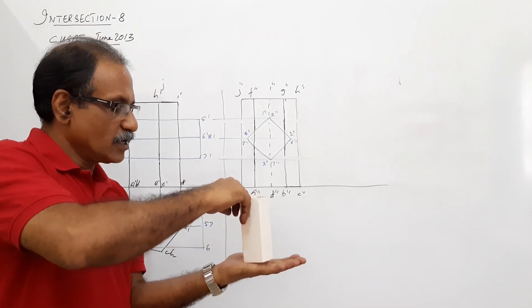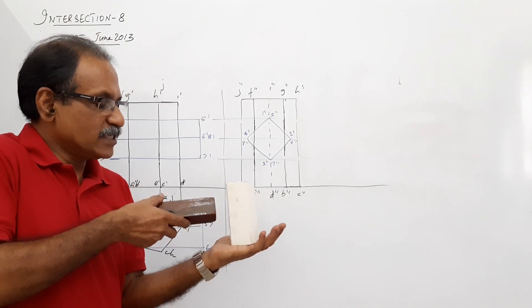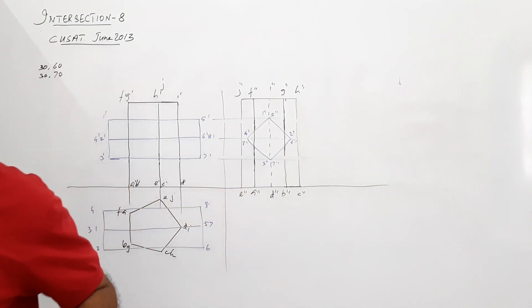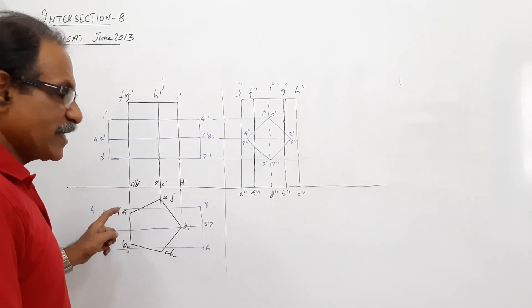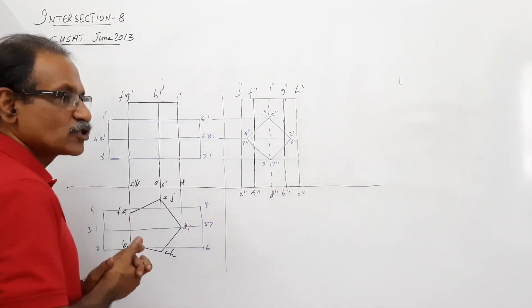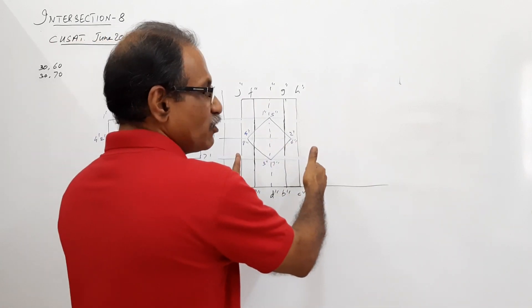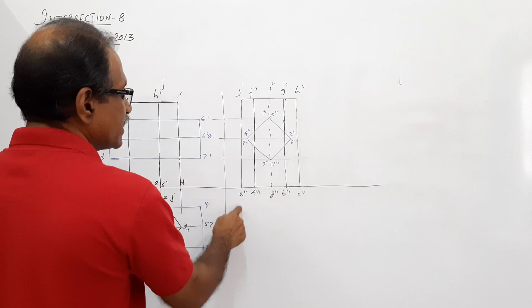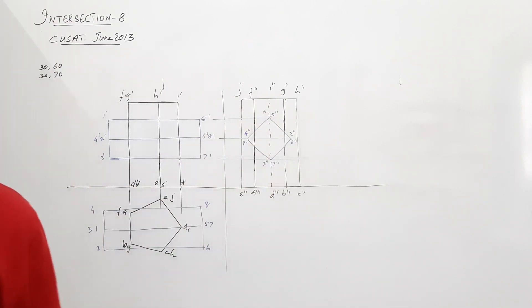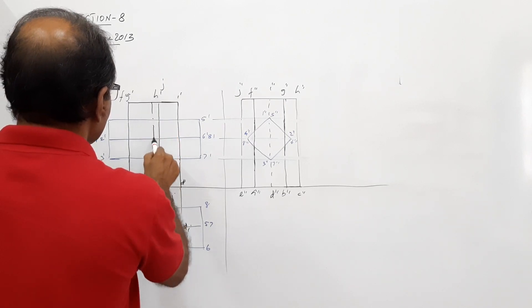This is how it looks — a pentagonal prism standing like this with an edge of base perpendicular to PP, which is penetrated by a square prism with all lateral faces equally inclined to HP, and the two axes intersect. I have drawn the plan, elevation, and end view. The square prism is labeled A B C D E F G H.